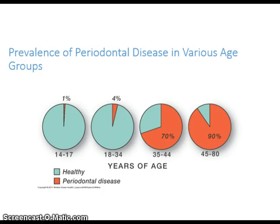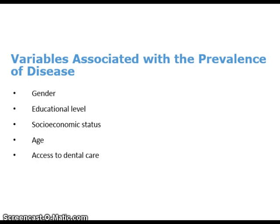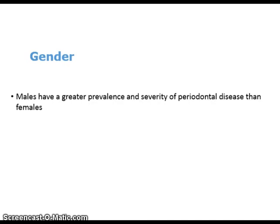This diagram shows the prevalence of periodontal disease in various age groups. Notice that it goes from 1% at ages 14–17 all the way to 90% in patients ages 45–80. Certain variables are associated with the prevalence of disease. Some of these are gender, educational level, socioeconomic status, age, and access to dental care. Males have a greater prevalence and severity of periodontal disease than females.